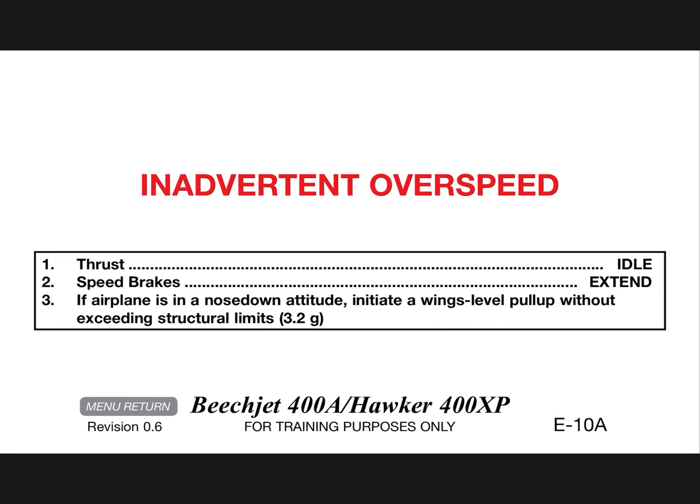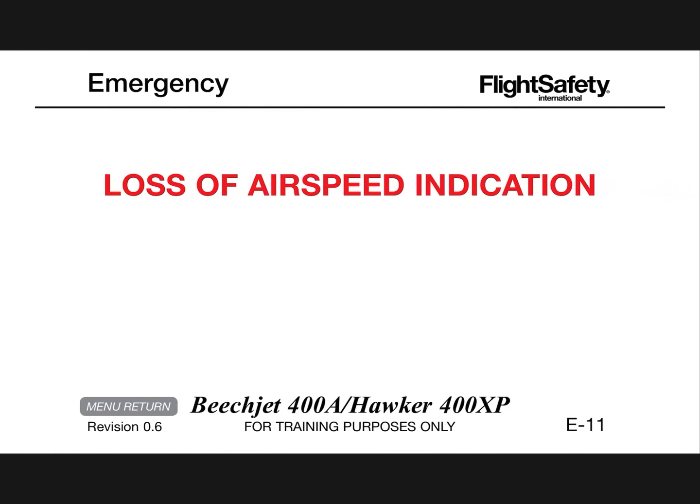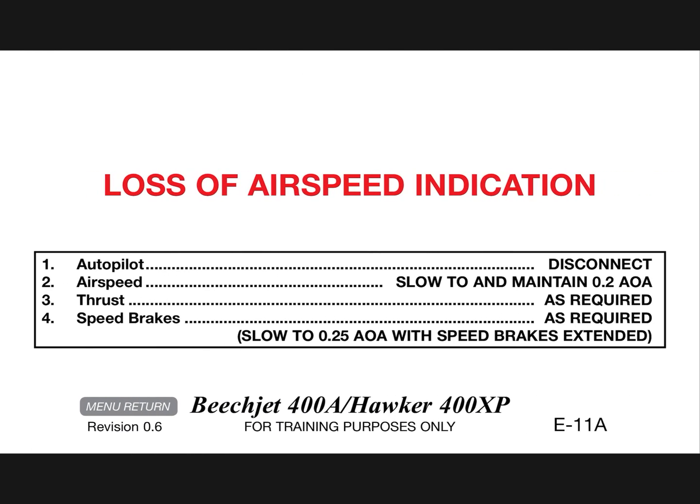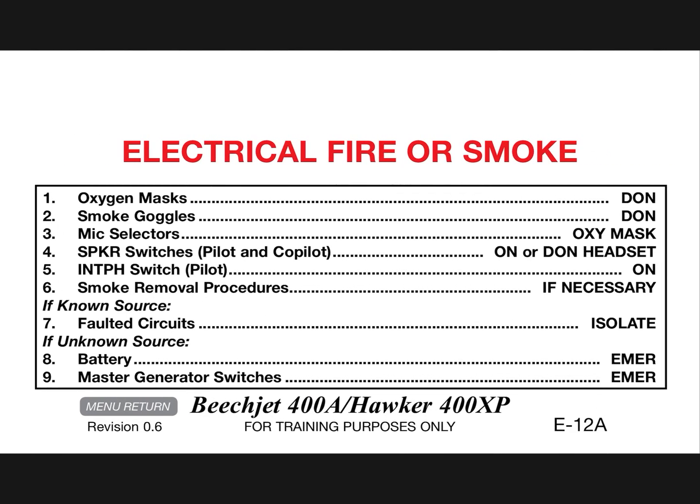Inadvertent overspeed: thrust idle, speed brakes extend. If airplane is in a nose down attitude, initiate a wings level pull up without exceeding structural limits of 3.2 G's. Loss of airspeed indication: autopilot disconnect, airspeed slow to and maintain 0.2 AOA, thrust as required, speed brakes as required, slow to 0.25 AOA with speed brakes extended.